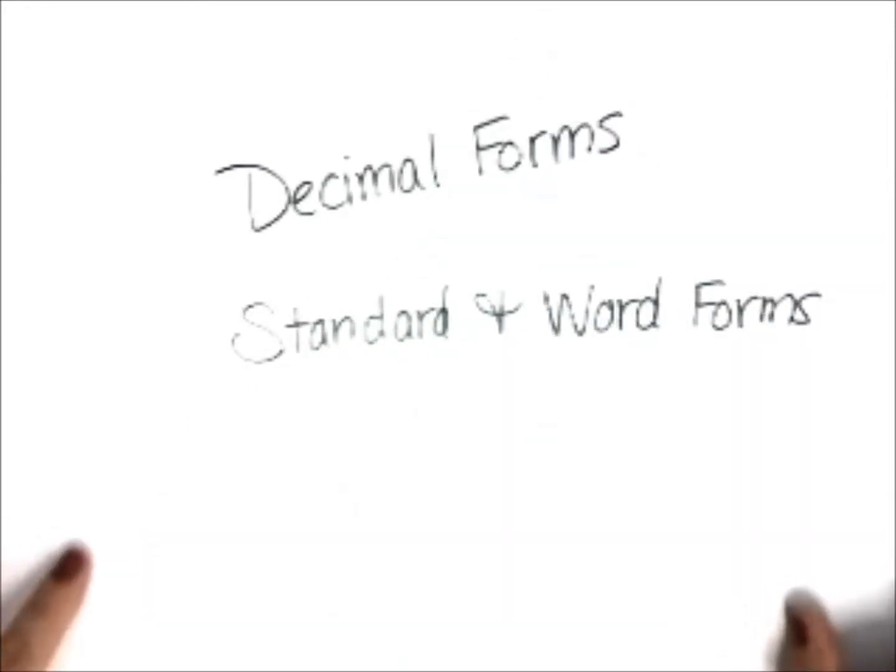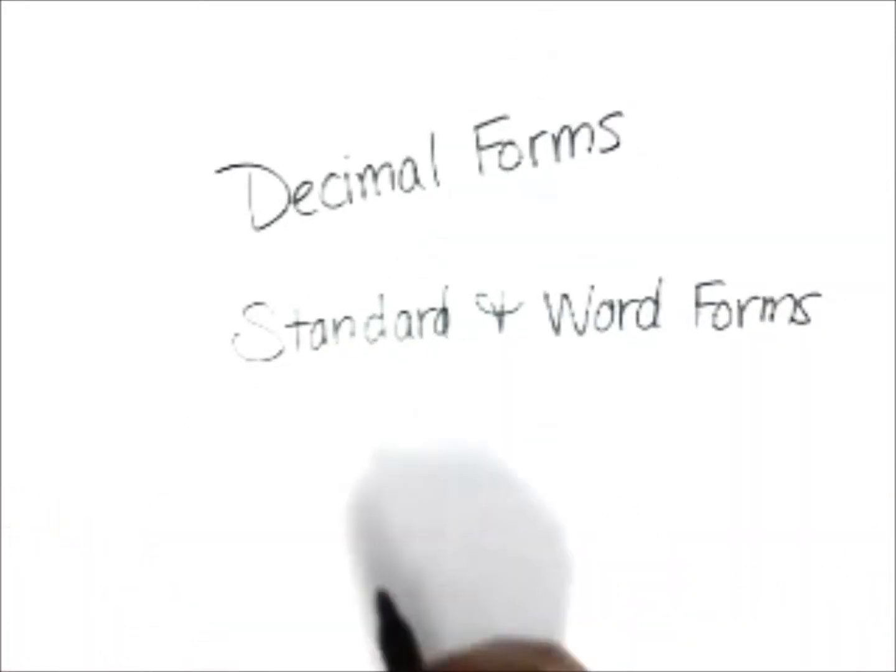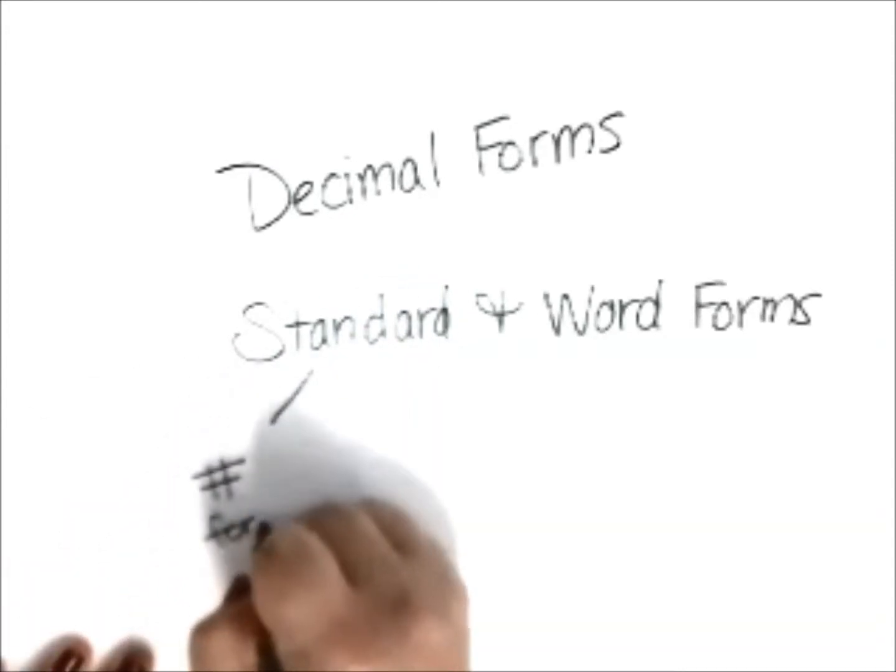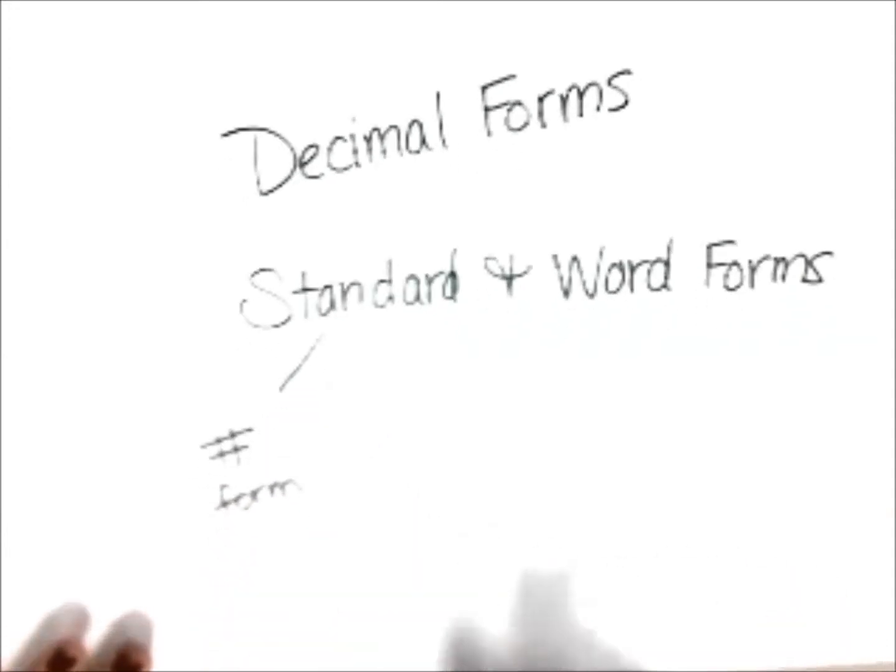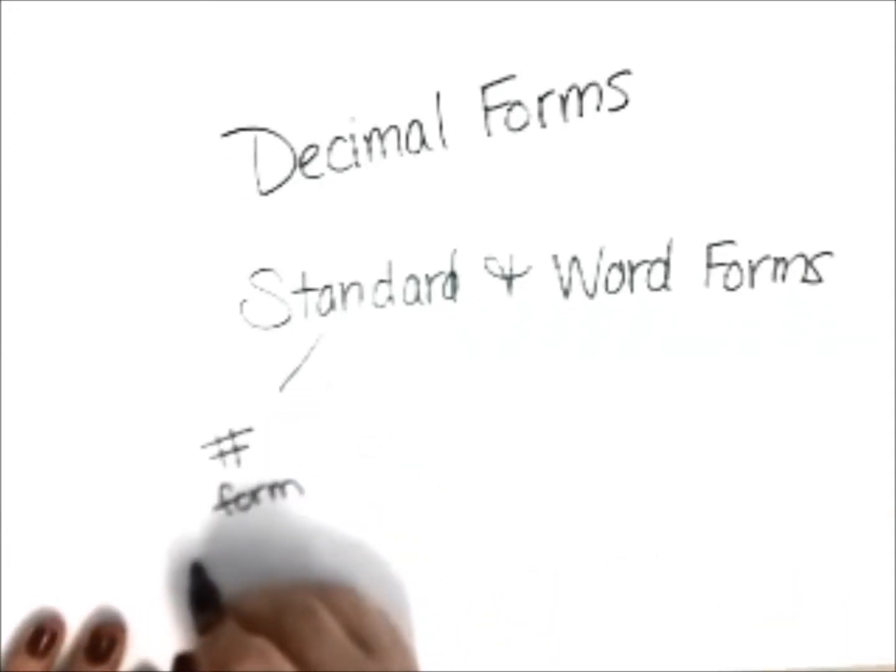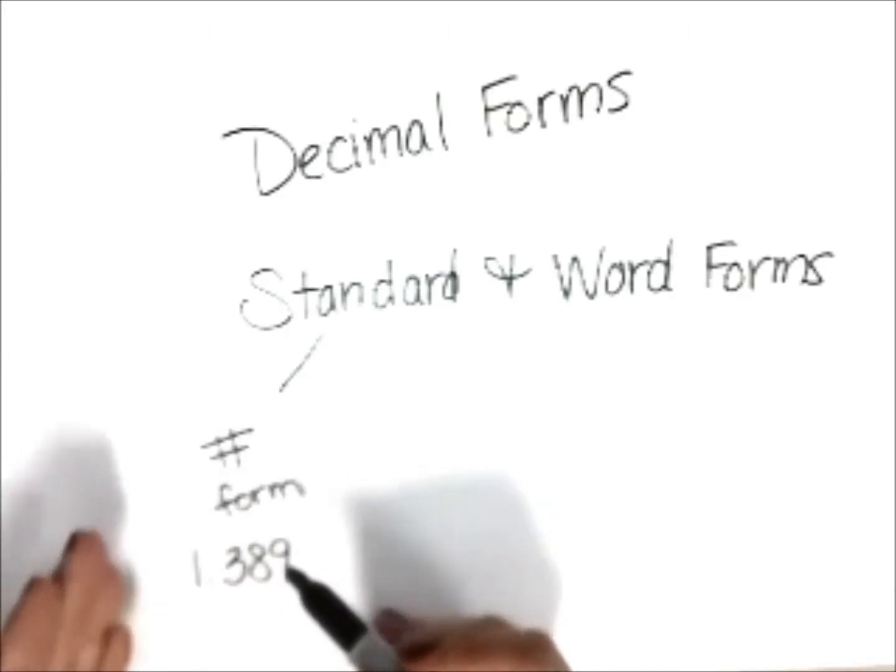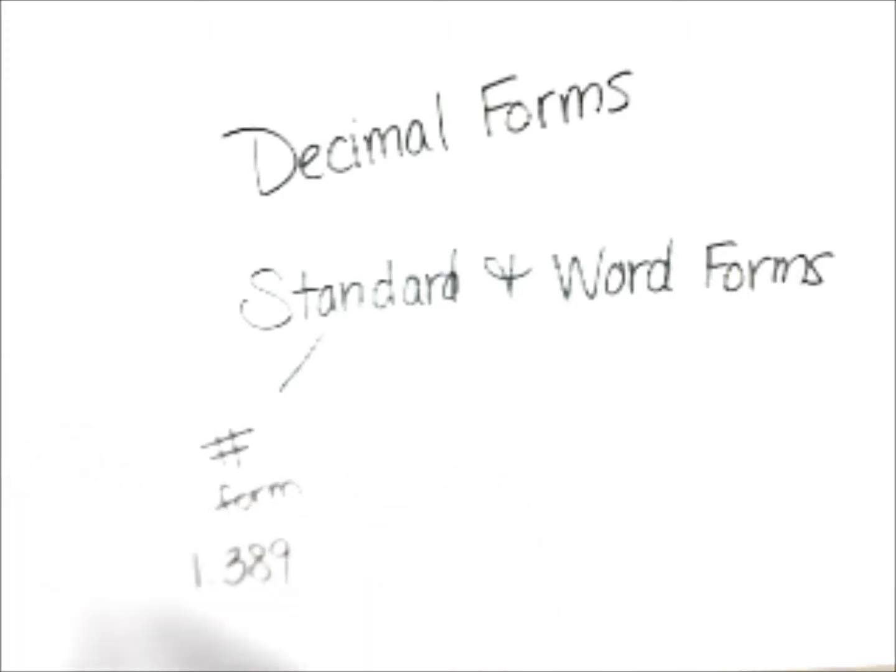Decimal forms, standard and word. Standard form simply means the number form of a decimal. For example, if I have 1 and 389 hundredths, this is the numeric version of a decimal. And that is called standard form because it's standard.